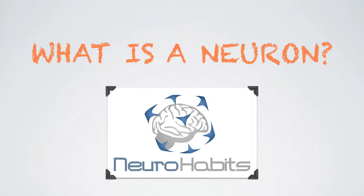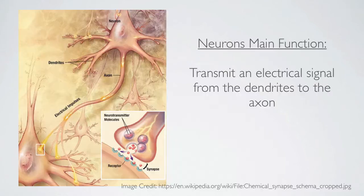What is a neuron? Neurons are really, really amazing cells. The main function of a neuron is to transmit an electrical signal in one direction, from the branches down to the roots.